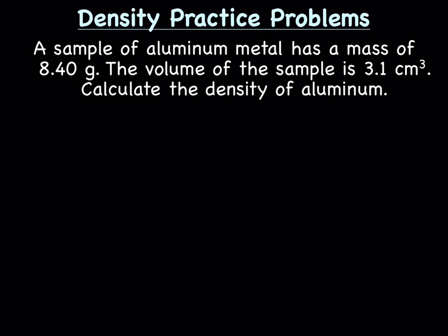Let's try a couple density practice problems. We have a sample of aluminum metal that has a mass of 8.4 grams and the volume is 3.1 centimeters cubed. Calculate the density of aluminum.